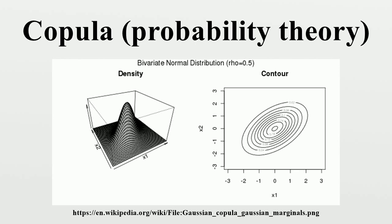For instance, in the bivariate case, C is a bivariate copula if these conditions hold for all arguments in [0,1].